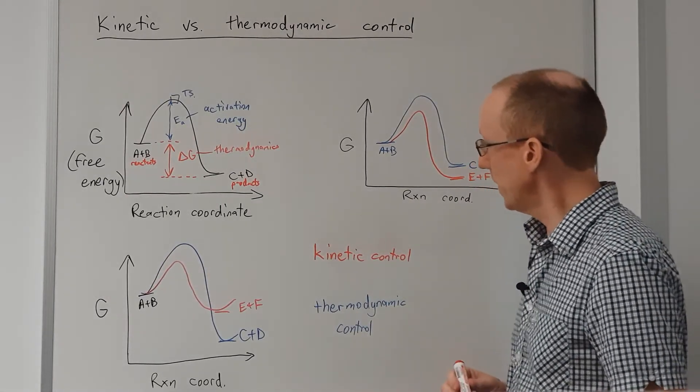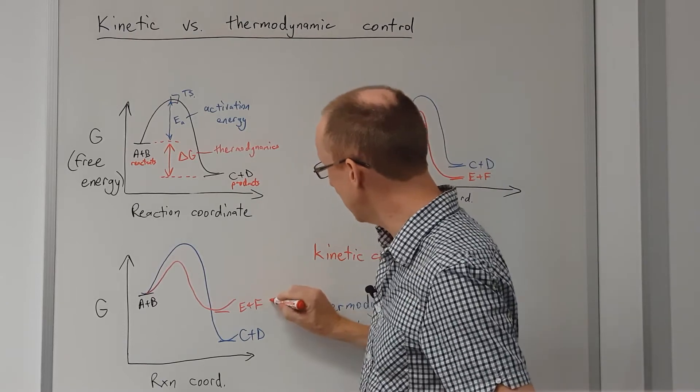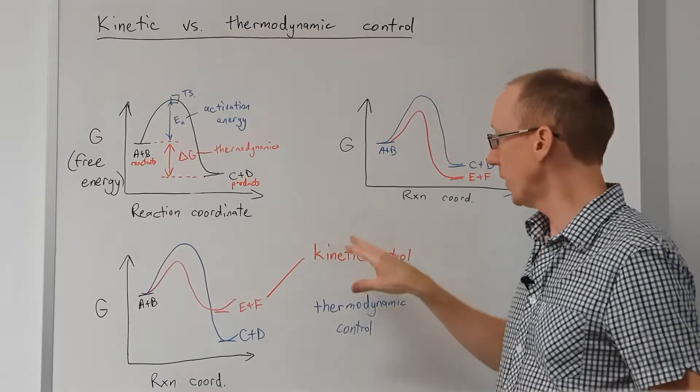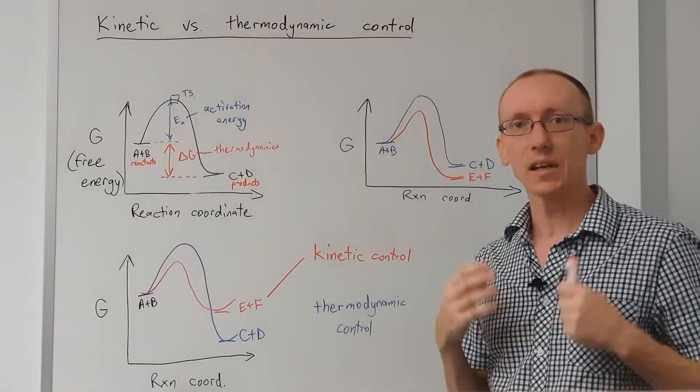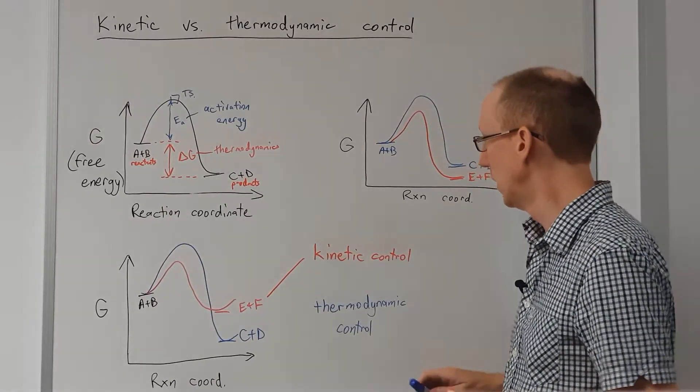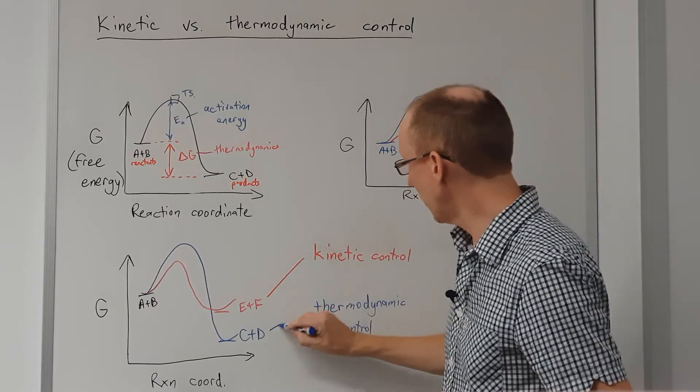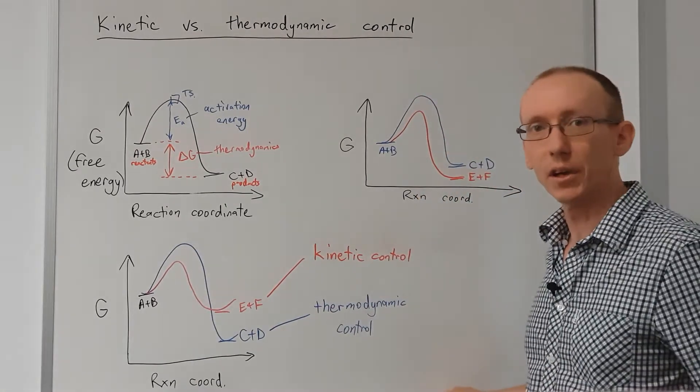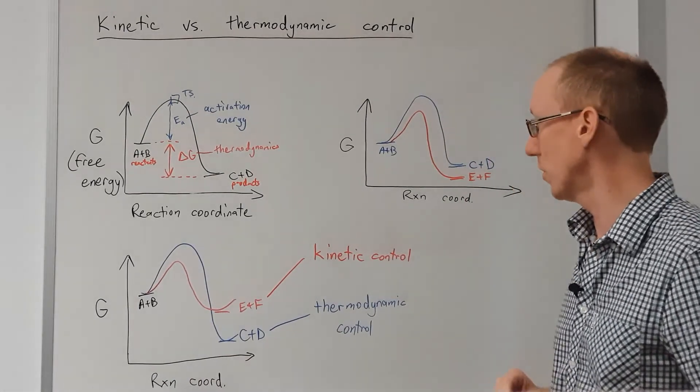Well, this one here, E plus F, we're going to call that the kinetic product. And that reaction, if we conduct it right, we can make the reaction be under kinetic control. This one we're going to call the thermodynamic product. And we can get to that product by using conditions of thermodynamic control.